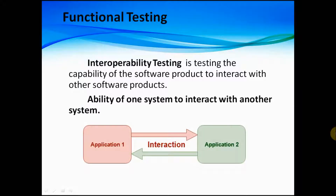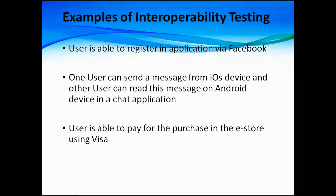Interoperability testing is testing the capability of the software product to interact with other software products — it is the ability of one system to interact with another system. Here you can see two applications that can interact with each other. The first example: a user is able to register in an application via Facebook.